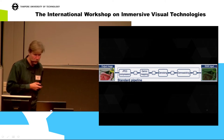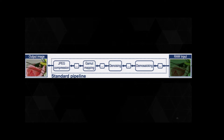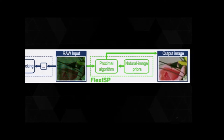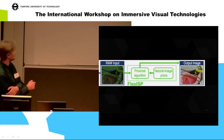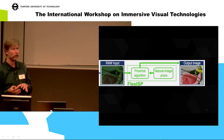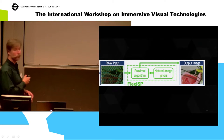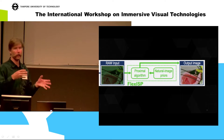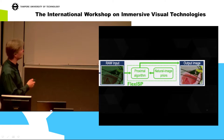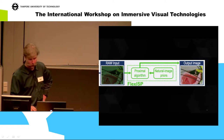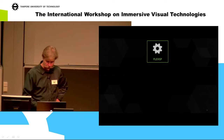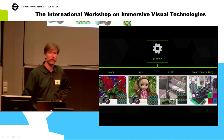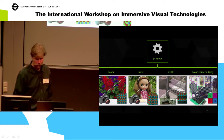This work replaces the standard image processing pipeline with a modern iterative optimization pipeline. The optimization algorithm compares the current image with the raw input image to see if they are compatible, checking for introduced errors. We also have natural image priors that tell us what a good output image looks like. We demonstrated this optimization pipeline with several different imaging applications.